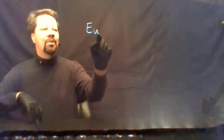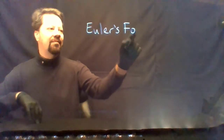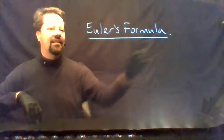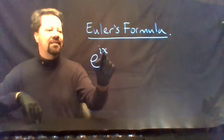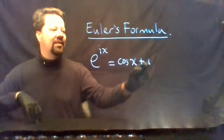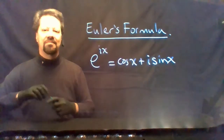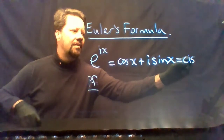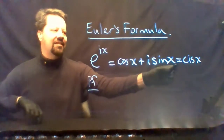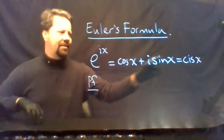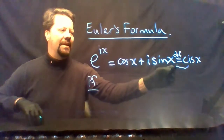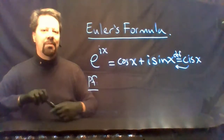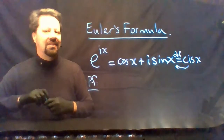With just this knowledge of three Maclaurin series, we can prove Euler's formula: e to the ix equals cosine x plus i times sine of x. Recall from pre-calculus: cosine x plus i sine x is called cis x, by definition. We're going to prove that cis x equals e to the i times x using the Maclaurin series.